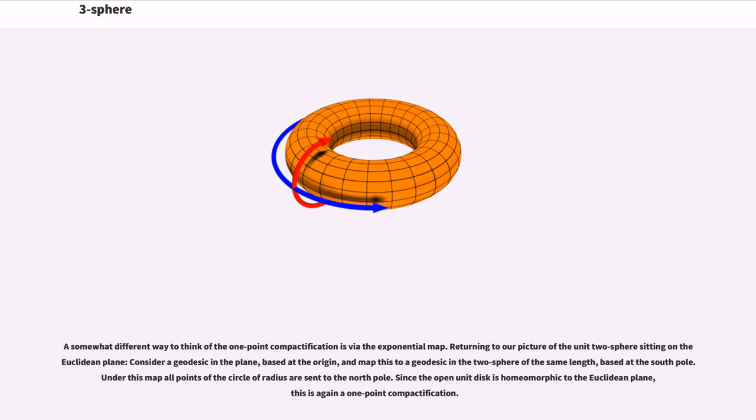A somewhat different way to think of the one-point compactification is via the exponential map. Returning to our picture of the unit two-sphere sitting on the Euclidean plane, consider a geodesic in the plane, based at the origin, and map this to a geodesic in the two-sphere of the same length, based at the south pole. Under this map all points of the circle of radius are sent to the north pole. Since the open unit disk is homeomorphic to the Euclidean plane, this is again a one-point compactification.